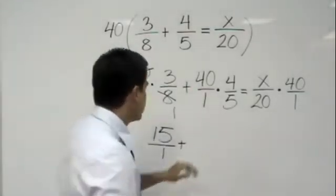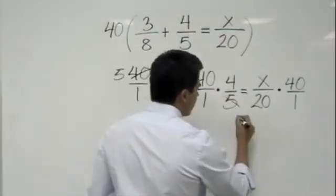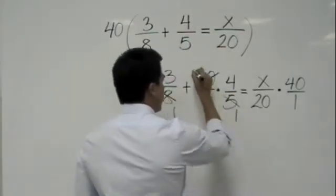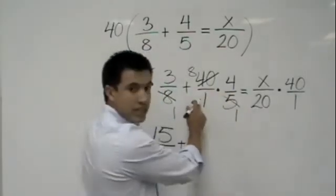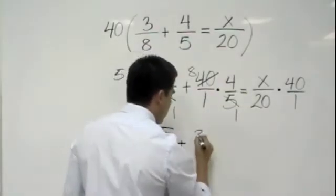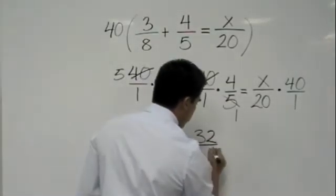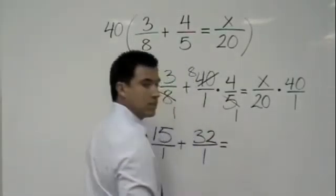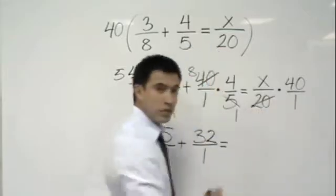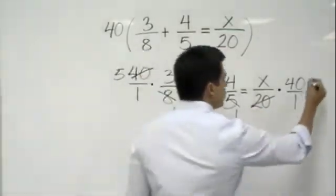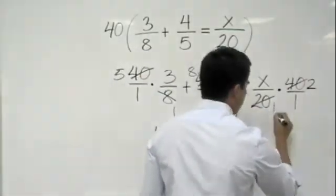well, let's cross-cancel again. 5 goes into 40 8 times. So, 8 over 1 times 4 over 1 gives me 32 over 1 equals 20 goes into 40 2 times. And that would be a 1.